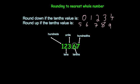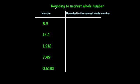Let's have a look at some questions. Here are some numbers: 8.9, 14.2, 1.912, 7.49, and 0.6182, and we're going to round all of them to the nearest whole number. For 8.9, the tenths digit is 9, so we round up to the next whole number, which is 9. For 14.2, the tenths digit is 2, so we round down to 14.